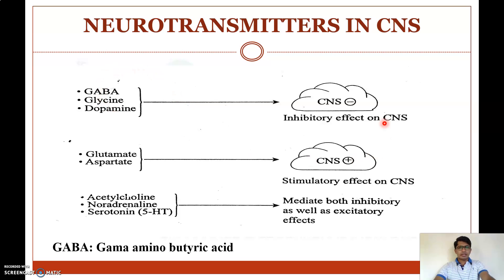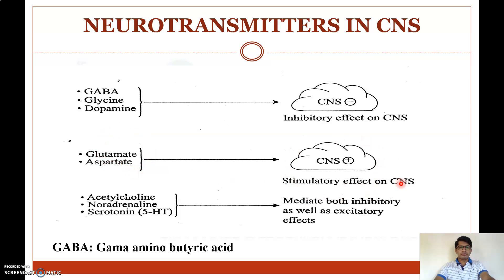Examples of inhibitory neurotransmitters are GABA, glycine, and dopamine. Whenever these neurotransmitters are activated in the CNS, they produce an inhibitory effect and depress the CNS. Examples of excitatory neurotransmitters are glutamate and aspartate, which produce CNS stimulation.